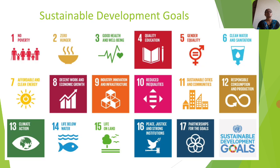Coming to Sustainable Development Goals, SDG. These are framed in the year 2015 to be achieved in 2030. It came into force in 2016. This includes 17 goals, 169 targets and 247 indicators. The 17 goals include the first one, no poverty;